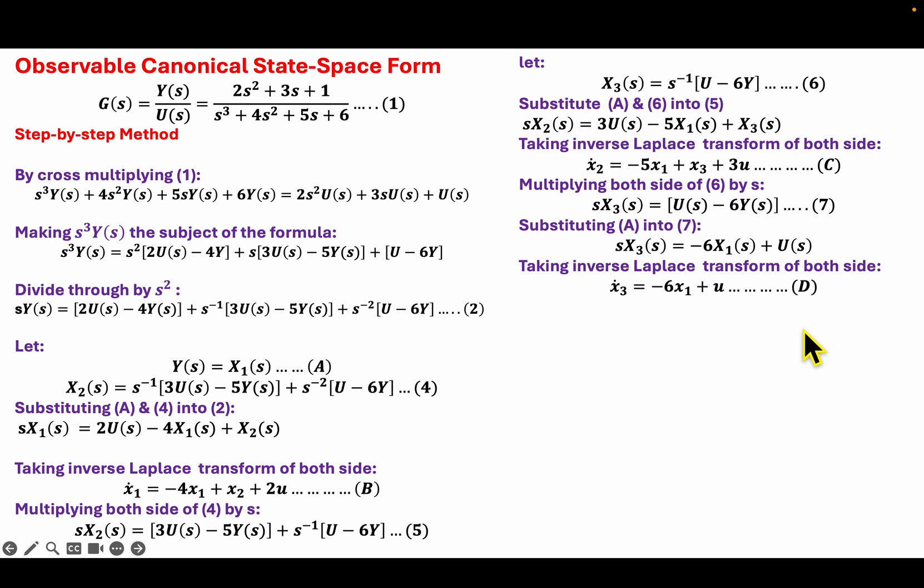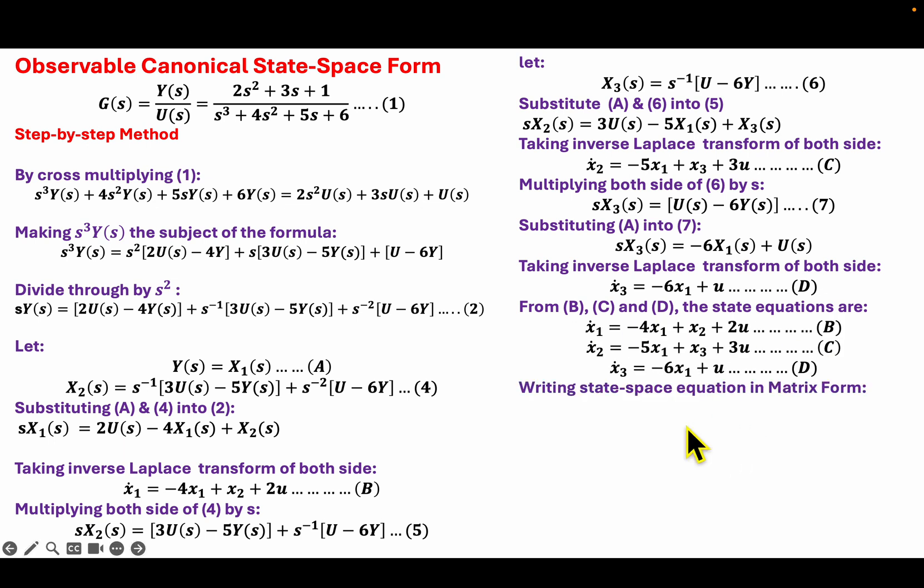So my state-space equations are just from B, C, and D, and they are these equations. Representing them in matrix form, I will end up with equation E.